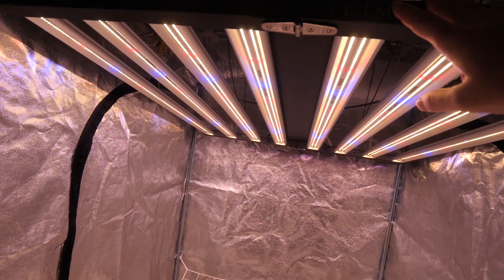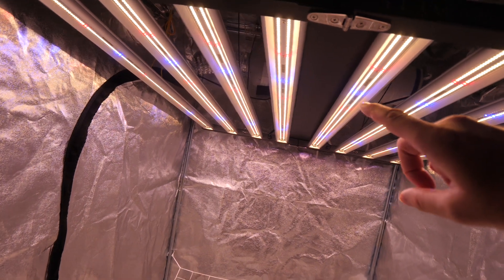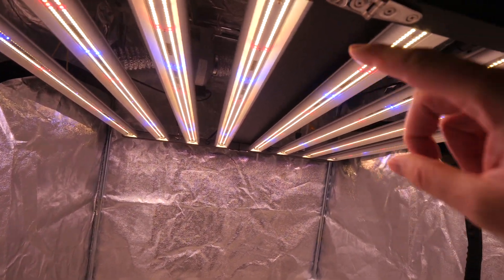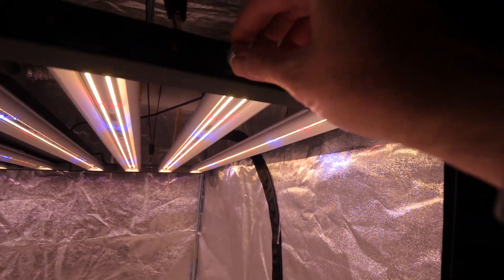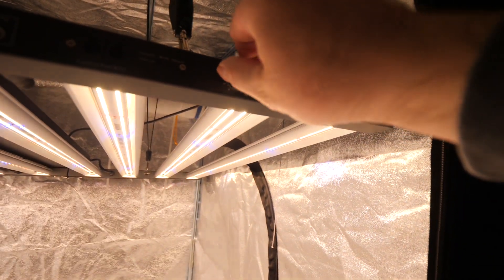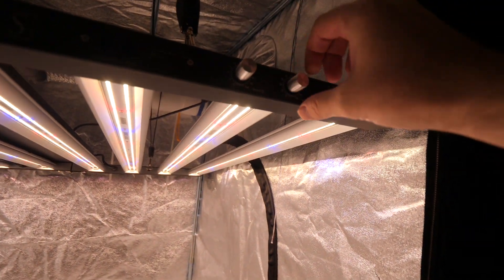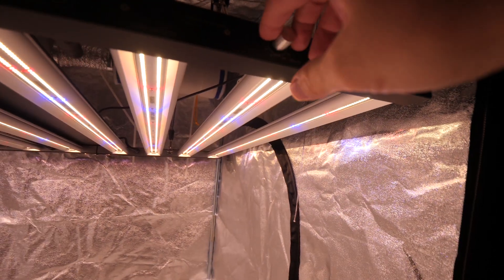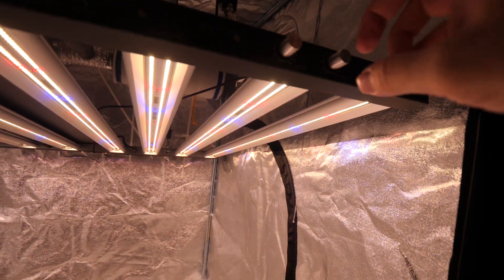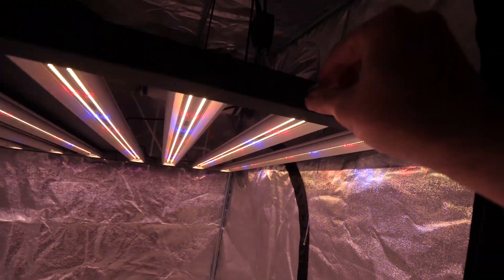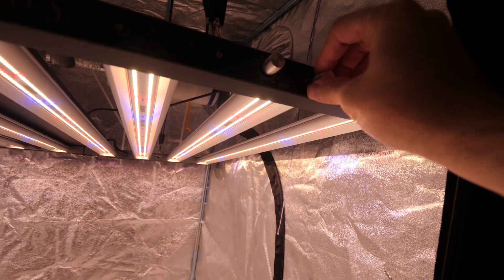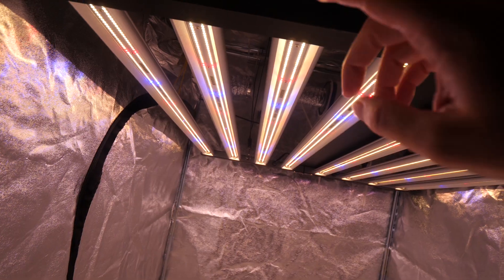So we got the Slim 650S here, 650 watts of pure power and I really love how powerful this light is. We got the dimmers up here. You can control exactly the amount of power you want and if you have a power meter you can easily tell exactly how much power you're getting and set it at exactly the right setting which I absolutely love.